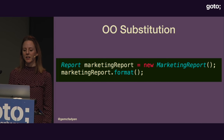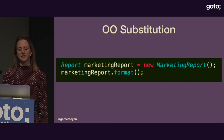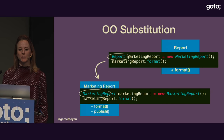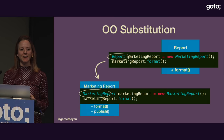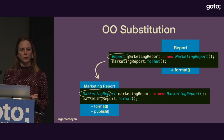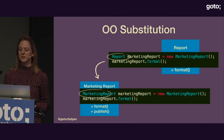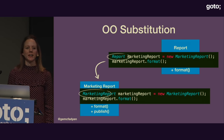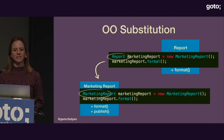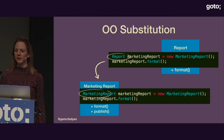In a small Java snippet: we have a declared `Report` variable that's a `MarketingReport`, and we call `format`. Liskov Substitution says we should be able to replace the `Report` type with the `MarketingReport` type and everything should still run — because the `format` method is available on the most generic layer. Now in functional programming we don't really use inheritance, so let's see how we can model something similar in Elixir.